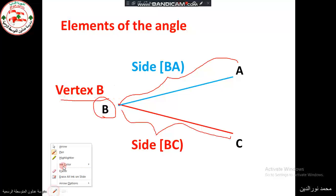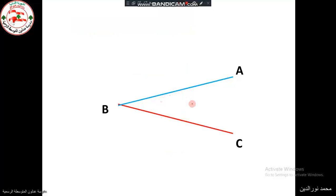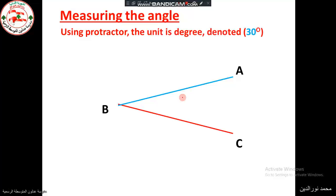The elements of an angle are the two sides and a vertex. Each angle has a measure, and the unit of that measure is degrees. We can measure the angle or construct an angle using an instrument called a protractor. The unit is degree, denoted by a small round symbol.